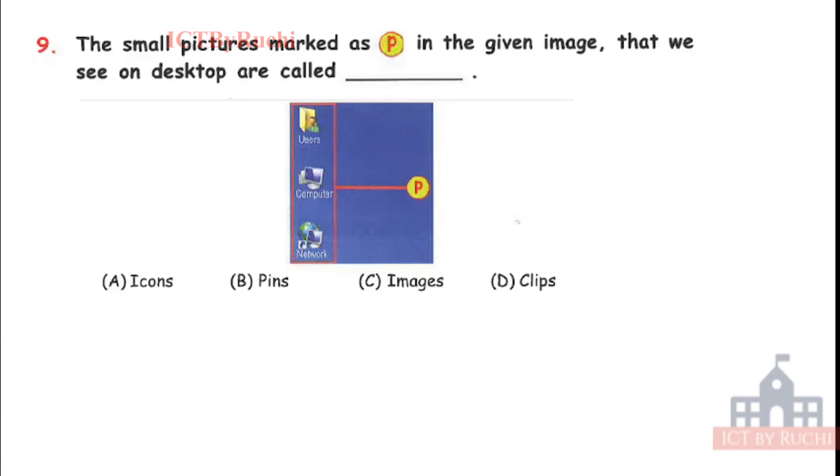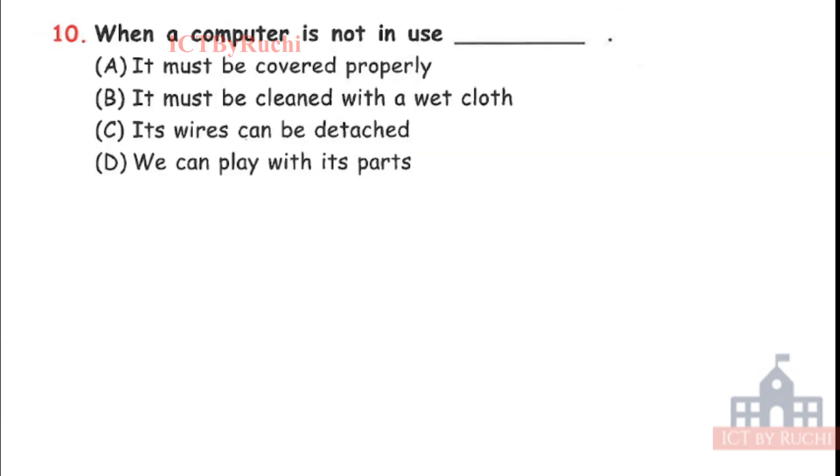Ninth question. The small picture marked as P in the given image that we see on the desktop are called. Icons, pins, images or clips. Answer is A. As we know that icons make a desktop. So desktop has icons. Next. When a computer is not in use: It must be covered properly, it must be cleaned with a wet cloth, its wire can be detached, or we can play with its part. Answer is A. It should be covered to keep the dust away from it.